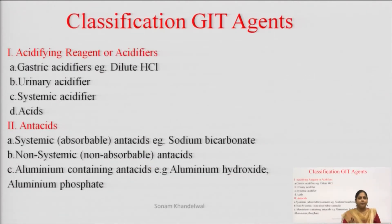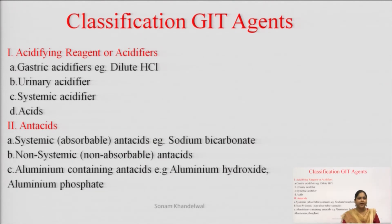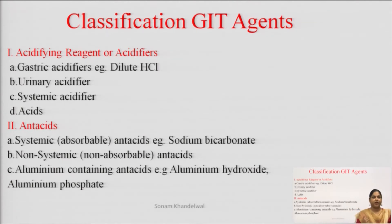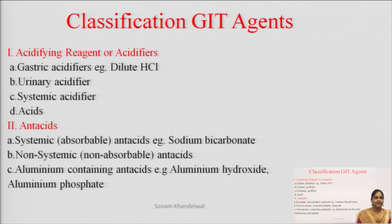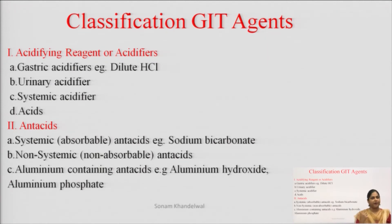Now moving on to the next slide, hum padhenge ki different GIT agents hain, unki kya classification hai. Classification is based on unki kya activity hai — matlab woh hamare GIT tract mein kis tarike se activity kar rahe hain. Sabse pehle jo hai acidifying agents, ya jinko hum acidifiers bhi bolte hain — ye kya karenge, ye humari stomach ki jo acidity hai, isko maintain karte hain. Maine abhi aapko bataya, kyunki stomach mein HCl gas hoti hai, is wajah se jo hamare stomach ka pH hai, that is acidic.